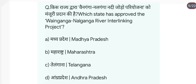Which state has approved the Wainganga–Nalganga river interlinking project? This approval was granted by Maharashtra. Answer is B.